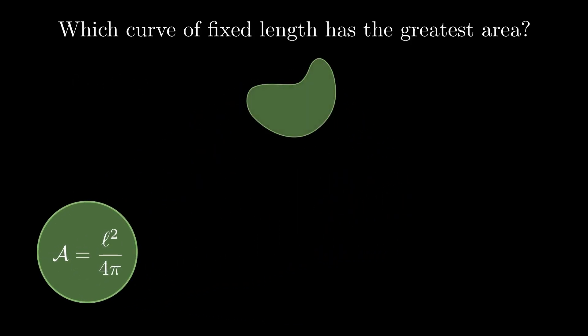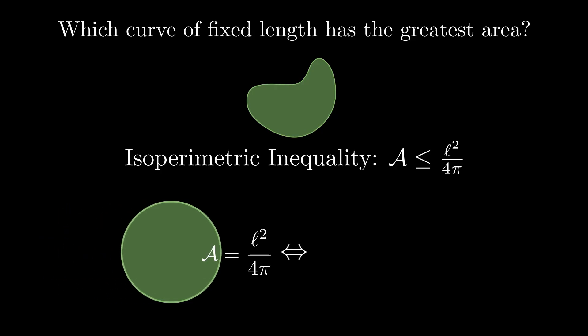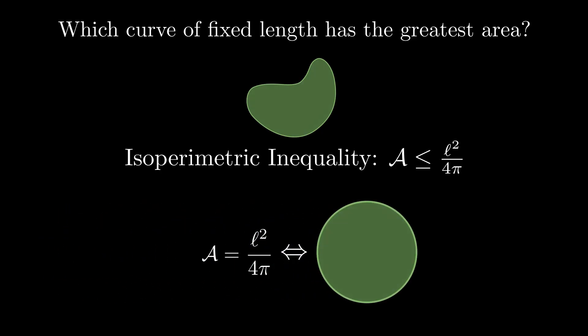Every other curve of the same length should have smaller area. This is expressed in the isoperimetric inequality. We have equality if and only if the curve is a circle.